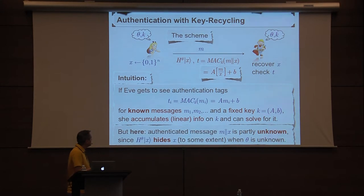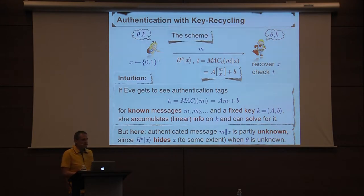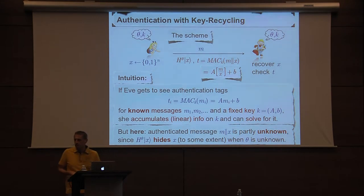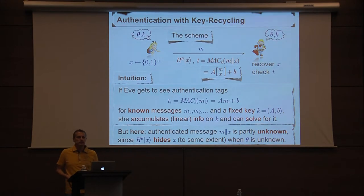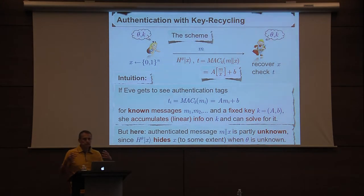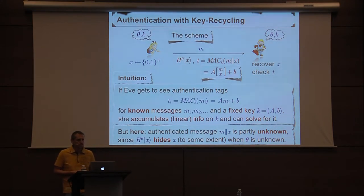But here the difference is that the authenticated message is partly unknown, because we have this additional randomness x. Intuitively, because Eve does not know theta, x is hidden — at least to some extent — behind these qubits. So intuitively we expect there's some uncertainty in x, and therefore hope that the authentication tag does not leak information on the key, particularly if this computation has some extractor-like properties. And indeed that's what we prove.